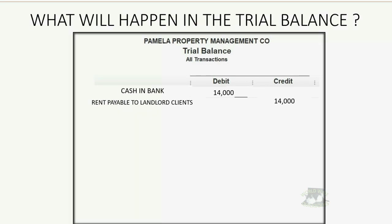If we make one invoice billing a landlord client for one particular tenant's service, what will happen? The $300 that we earned in service fee will show up as management fees income for the first time in the trial balance. And because we are billing the client and taking it out of what we're going to pay them, the moment we bill them for the service we rendered, the amount we owe them will decrease by $300 and become $13,700 rent payable to landlord clients.